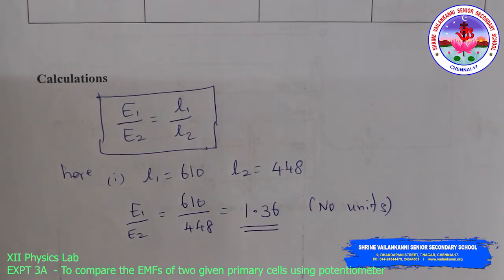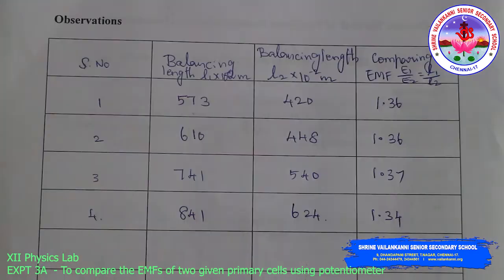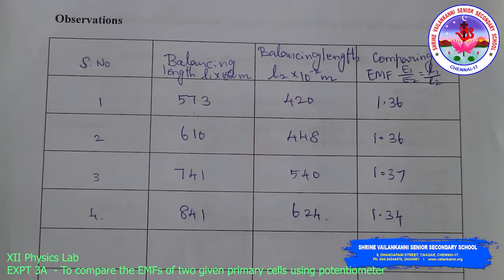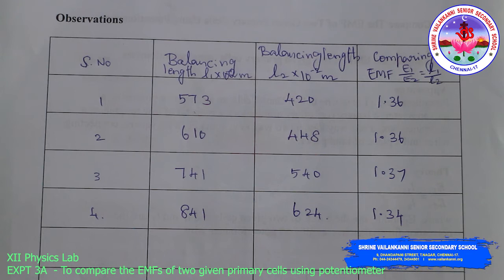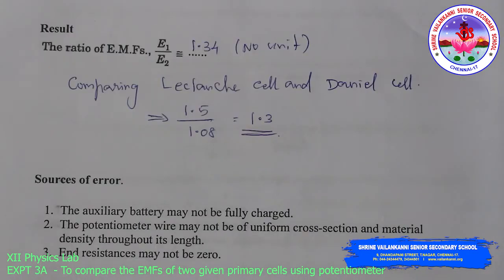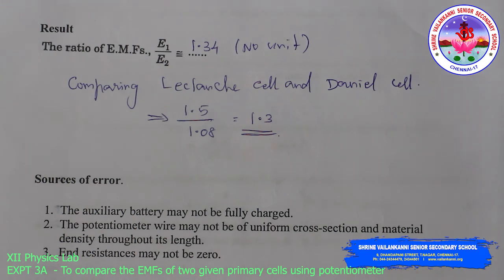The various values obtained for comparing EMF are 1.36, 1.36, 1.37, and 1.34. Taking the average, the net result for the ratio of EMFs is E1/E2 = 1.34. Comparing the Leclanche cell and the Daniel cell — the Leclanche cell EMF is 1.5 V and Daniel cell is 1.08 V, giving a ratio of 1.5/1.08 = 1.39, which is comparatively close to our experimental value.